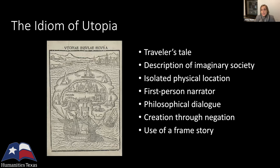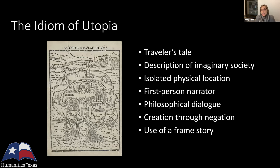First, a utopia describes an imaginary society in some detail, focusing in particular on the rituals that constitute social life. That society is always isolated — initially on an island or in some other remote location, including eventually other planets. Over the past 500 or so years since Thomas More invented the genre, the journey to utopia has increasingly tended to be a journey in time as well as space. The distance between home and the utopian world isn't just geographic but also potentially temporal — what's key is that the place of utopia is separate in some way, whether far away or in a distant time.